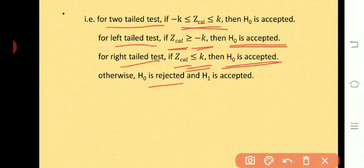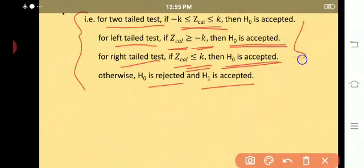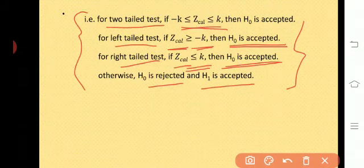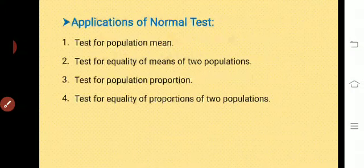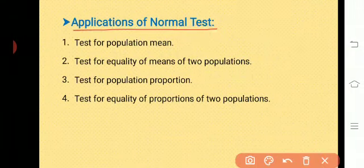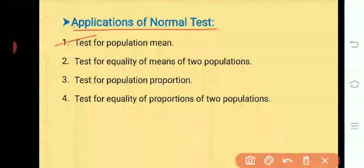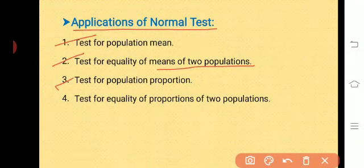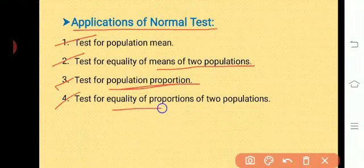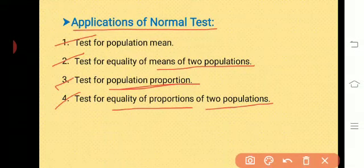Otherwise, H0 is rejected and H1 is accepted. You need to remember this test procedure because it is very useful in the testing of hypothesis. The next concept is applications of the normal test. There are four applications: first, test for population mean (single mean); second, test for equality of means of two populations; third, test for population proportion (single proportion); and fourth, test for equality of proportions of two populations.